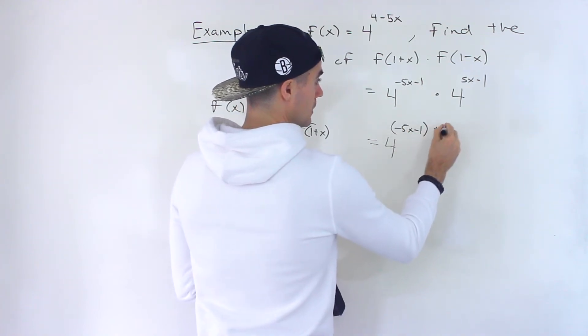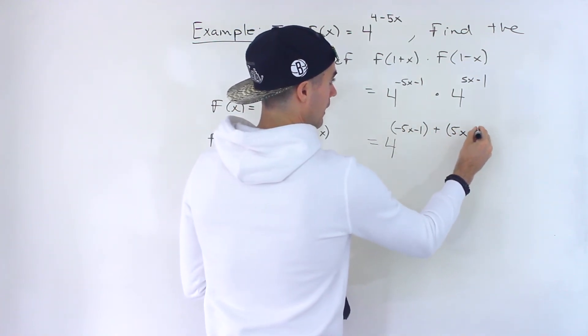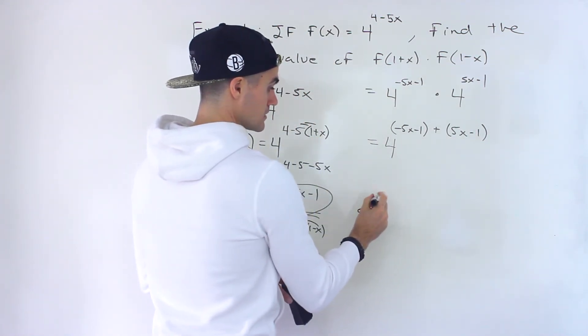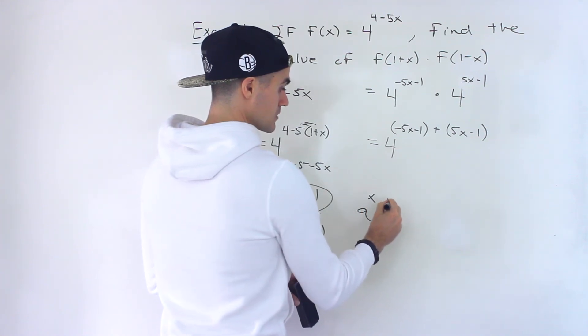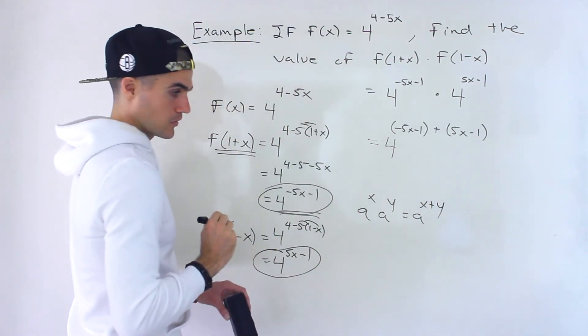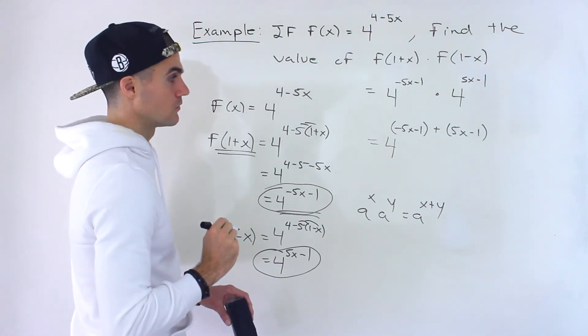We could take this exponent and add that exponent, and then have one base, right? Just in general, if we have a to the power of x times a to the power of y, we could add the exponents like that. That's the rule that we applied here.